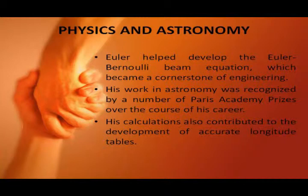Physics and Astronomy — Euler–Bernoulli Beam Equation: Euler helped to develop the Euler–Bernoulli beam equation, which became a cornerstone of engineering. His work in astronomy was recognized by a number of Paris Academy prizes over the course of his career. His calculations also contributed to the development of accurate longitude theories. In addition, Euler made important contributions in optics.